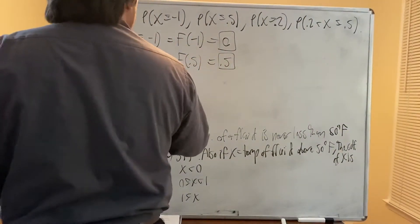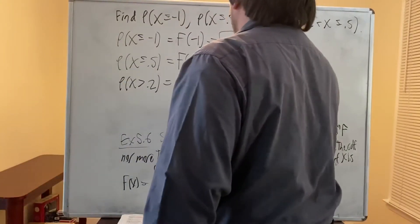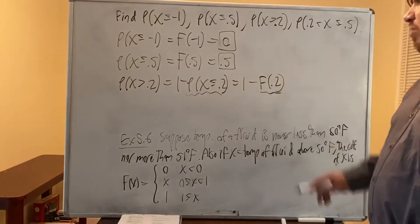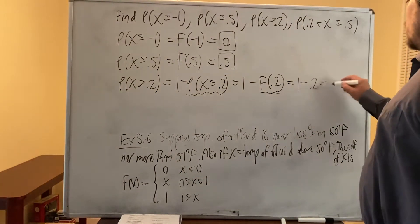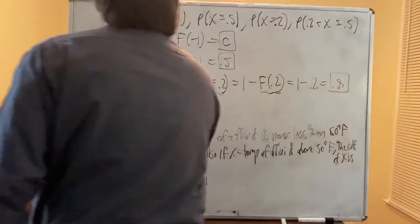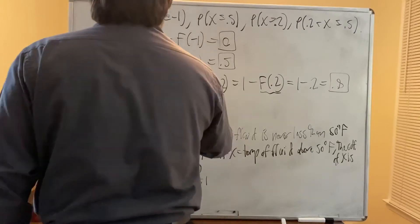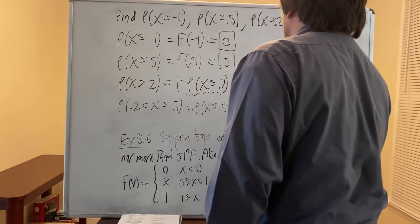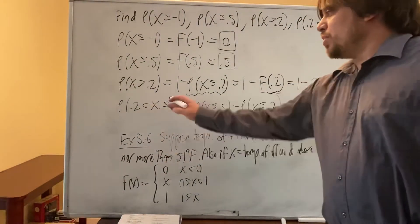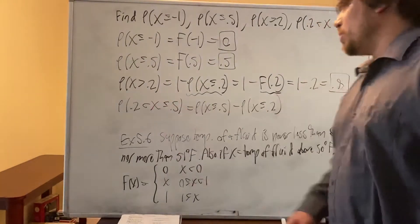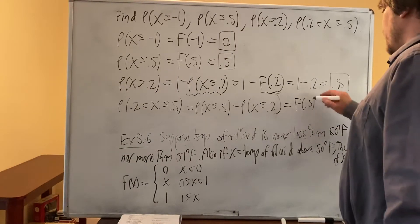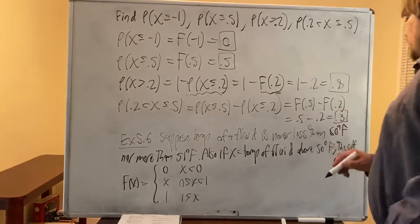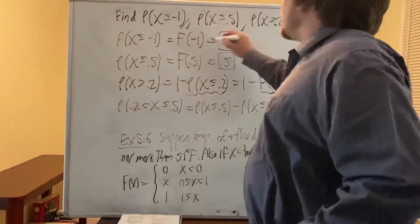P(X > 0.2) = 1 − P(X ≤ 0.2) = 1 − F(0.2) = 1 − 0.2 = 0.8. P(0.2 < X ≤ 0.5) = P(X ≤ 0.5) − P(X ≤ 0.2) = F(0.5) − F(0.2) = 0.5 − 0.2 = 0.3. That's example 5.6.